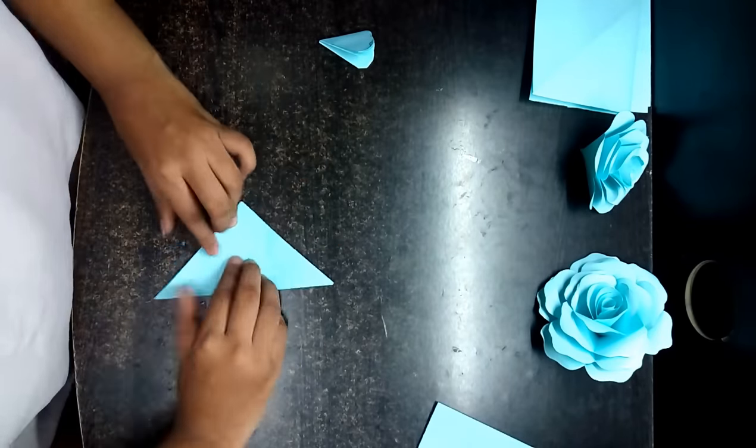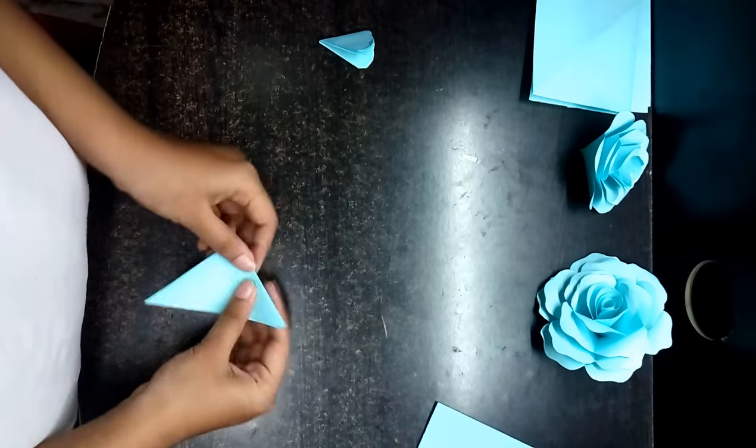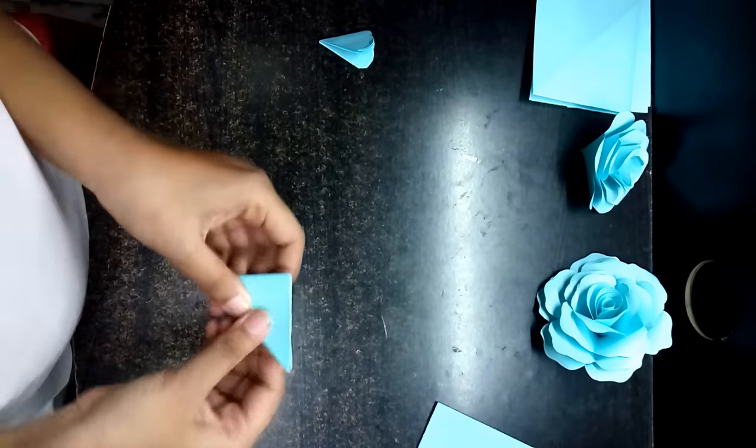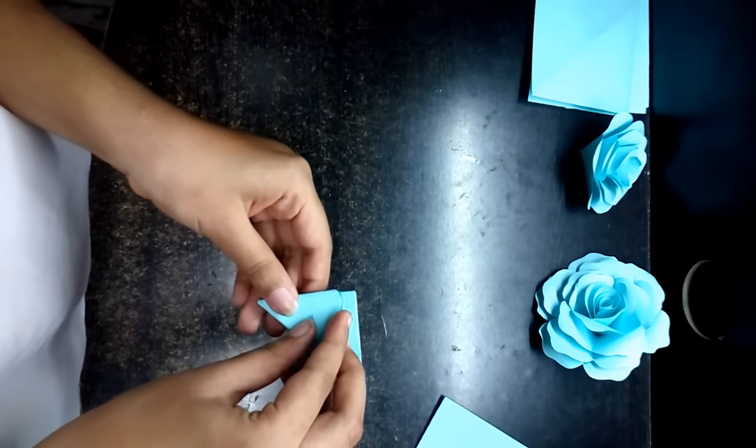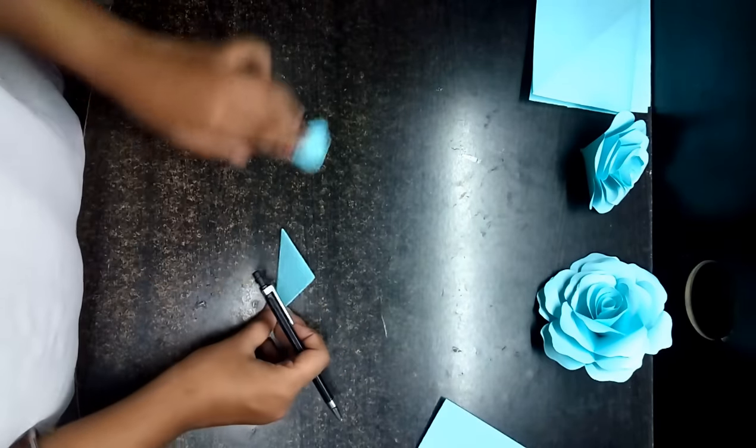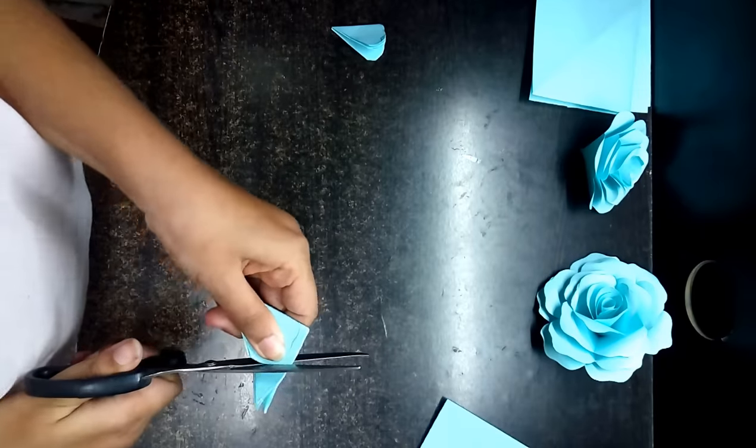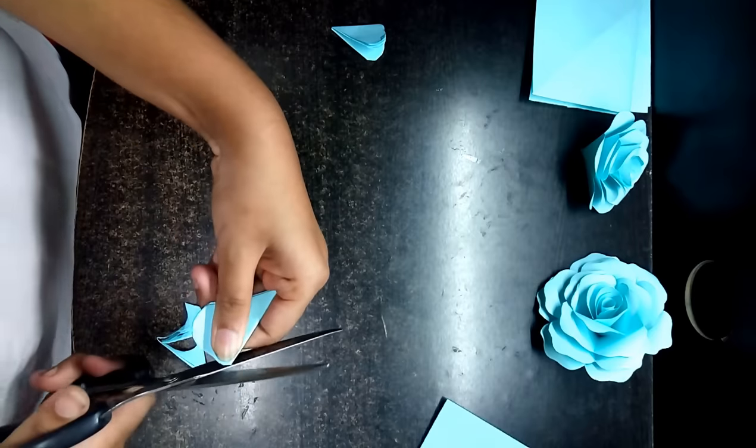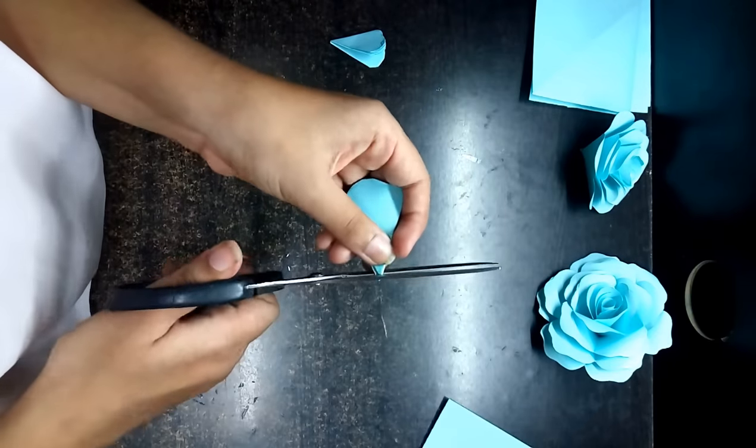Fold it, again a fold, and once again. There you go. I want all my petals to be equal, so I'm just going to trace it again from the closed side like this. I forgot to cut this from here.